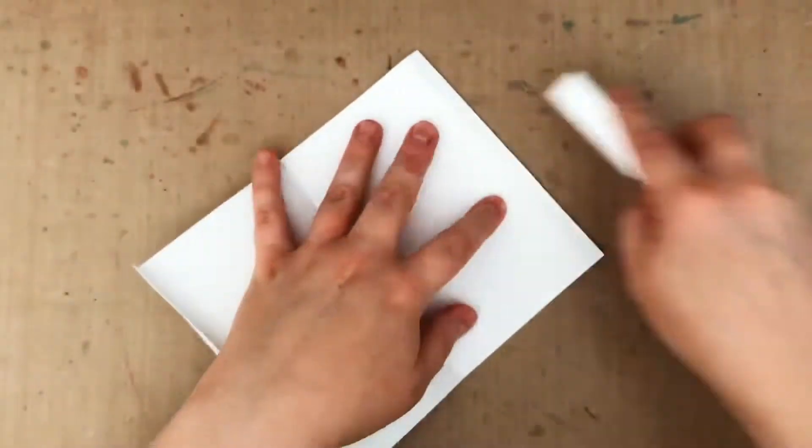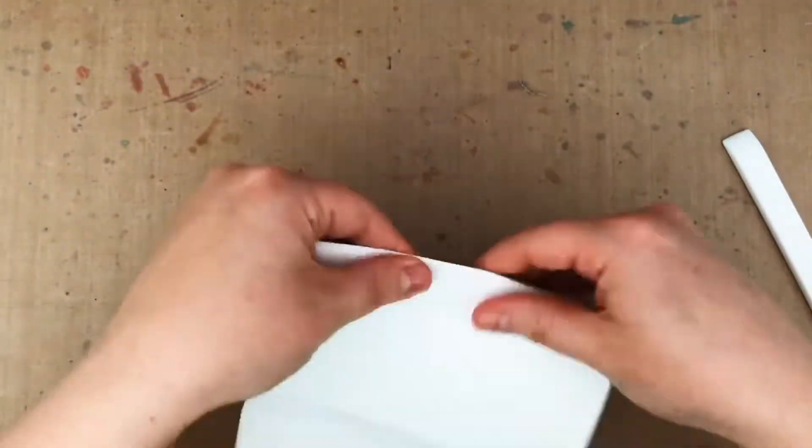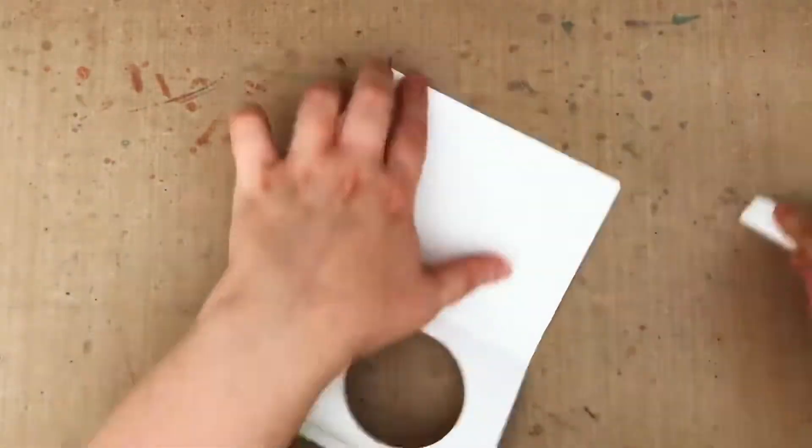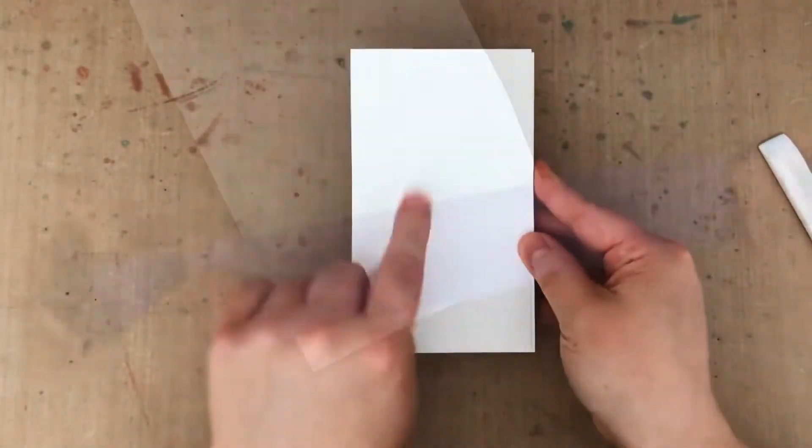And once my circle window is cut, I'm going to start folding my card and burnishing all the folds to make them crisp with my bone folder. You can see when I fold it up that that circle window I've made is going to be on the inside and that solid panel is going to be the front of my card, but I'm not ready to put it together yet.